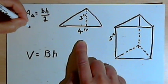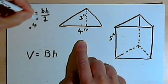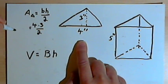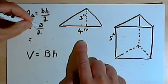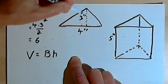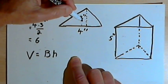So the base is 4 and the height is 3, so we'll multiply 4 times 3, divide that by 2. 4 times 3 is going to be 12. When we divide 12 by 2, we'll have 6. So the area of the base is 6 inches.